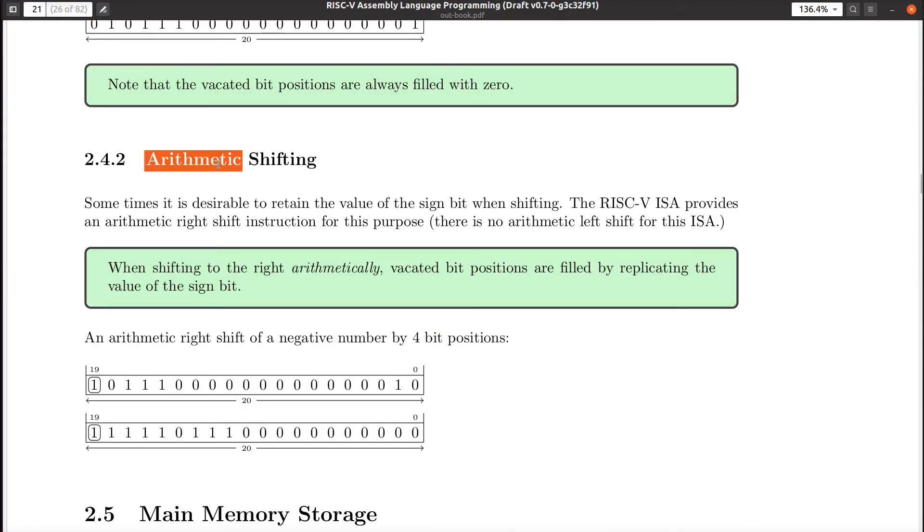Now, if you're shifting a two's complement number, what happens is the vacated bit positions are filled by replicating the sign bit. Now, this is only if you're shifting to the right. Arithmetic shifting to the right is what I'm talking about here. Okay? If you arithmetically shift to the left, it's kind of a strange thing. Some CPUs do it one way, other CPUs do it another way. We're only going to consider arithmetic shifting when we're shifting in the right direction.